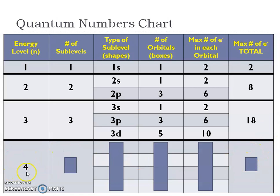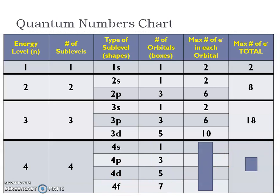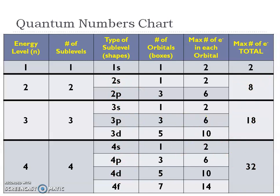In the fourth energy level with seven orbitals for the f sublevel, there can be a maximum of 14 electrons in those seven orbitals, two per box. So the total for the fourth energy level is 32. This is just a little above and beyond what you're used to — two, eight, eighteen, thirty-two filling in the shells. Now we have to break up that eight, eighteen, and thirty-two into what are called sublevels, and into that specific address of where that one electron is most likely going to be.